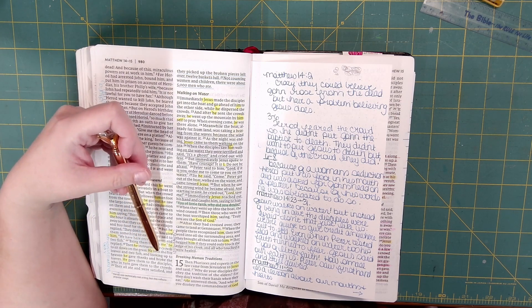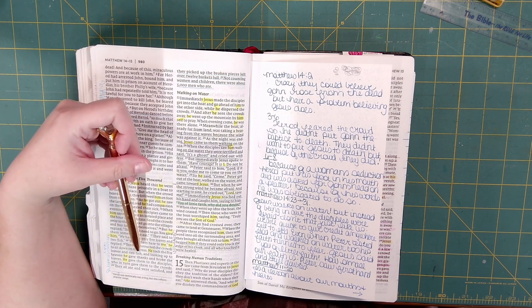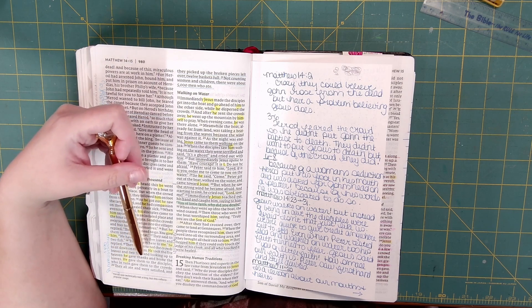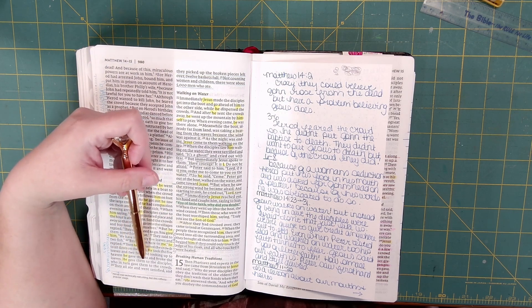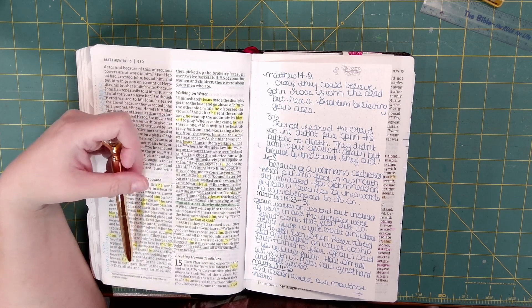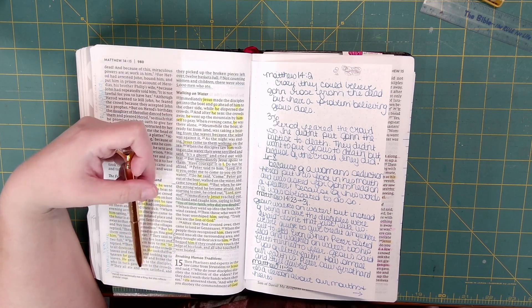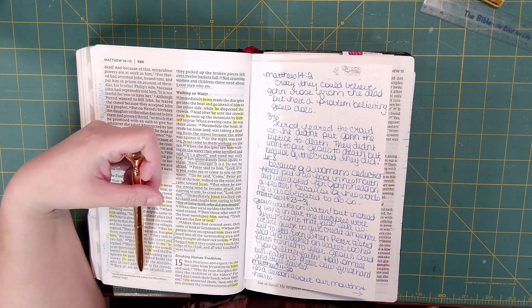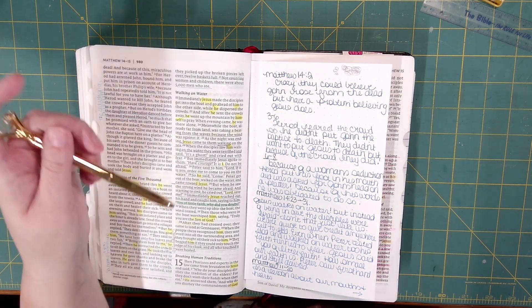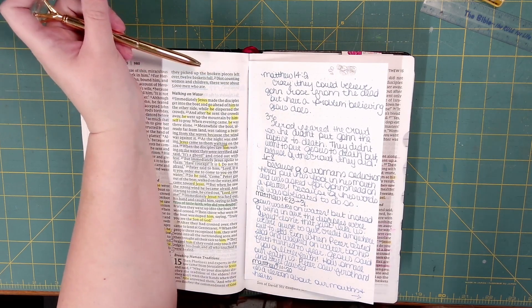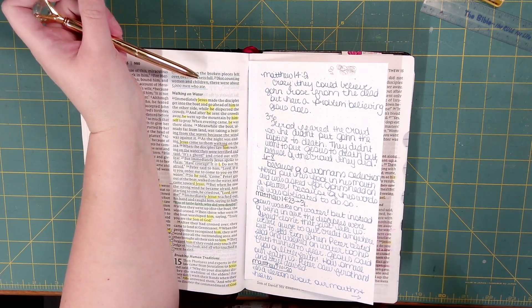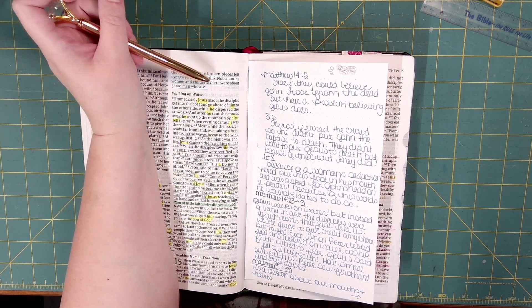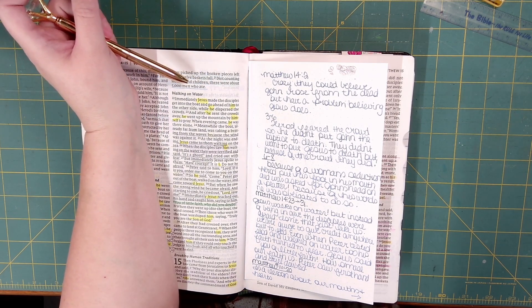Then he instructed the crowds to sit down on the grass. He took the five loaves and two fish and looked up to heaven. He gave thanks and broke the loaves. He gave them to the disciples, who in turn gave them to the crowds. They all ate and were satisfied, and they picked up the broken pieces left over, twelve baskets full. Not counting women and children, there were about five thousand men who ate.